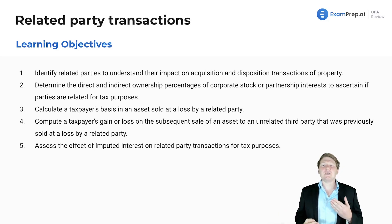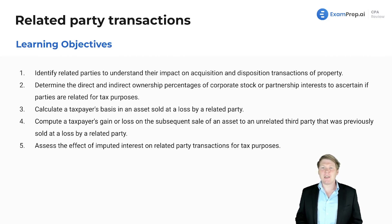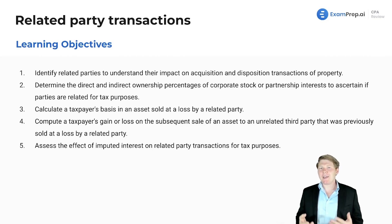Lastly, we want to assess the effect of imputed interest on related party transactions for tax purposes. This deals more so with loans given to family members at a very low interest rate, and the fact that you may have to pay extra fees or penalties on that. We'll talk about how the IRS feels about it.